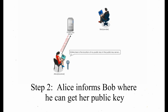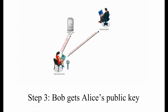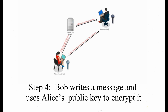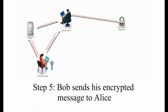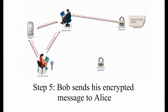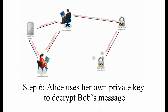Step 2: Alice informs Bob where he can get her public key. Step 3: Bob gets Alice's public key by following Alice's instructions. Step 4: Bob writes the message and uses Alice's public key to encrypt it. Step 5: Bob sends his encrypted message to Alice. Step 6: Alice uses her private key to decrypt Bob's message.